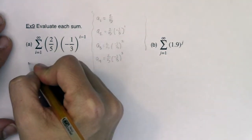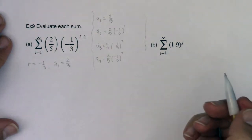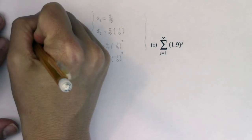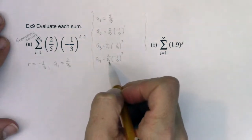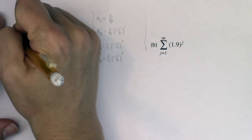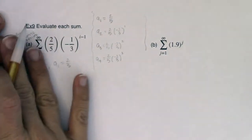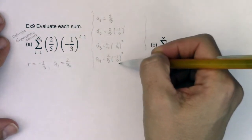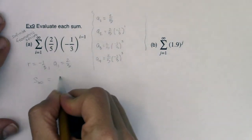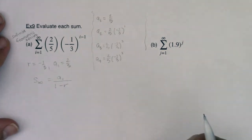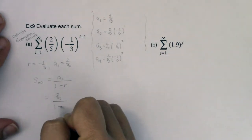Things to take note of: we know r is equal to negative 1/3 and a sub 1 is 2/5. Technically we have a geometric series because I'm being asked to add the terms — more specifically, an infinite geometric series because of the infinity up here. Now, we want s sub infinity, which is going to be a sub 1 over 1 minus r. In this case, a sub 1 is 2/5 and r is negative 1/3.